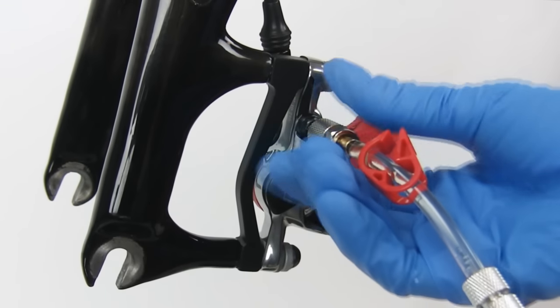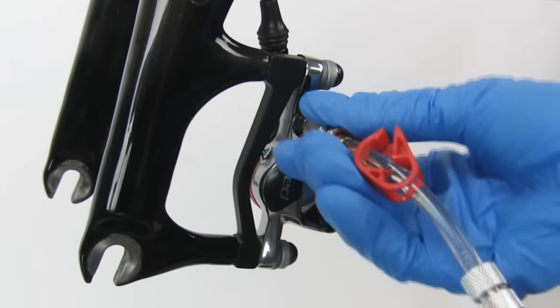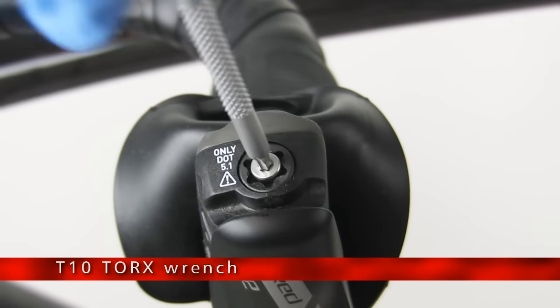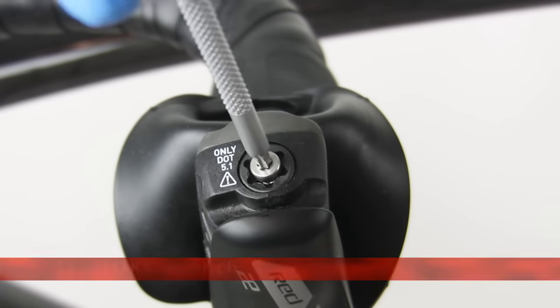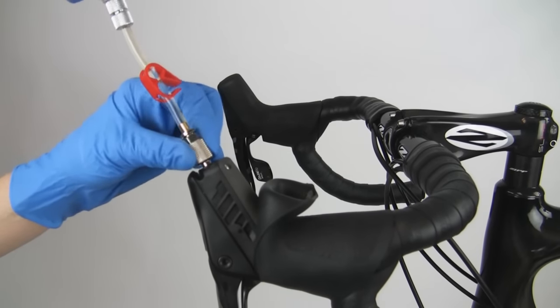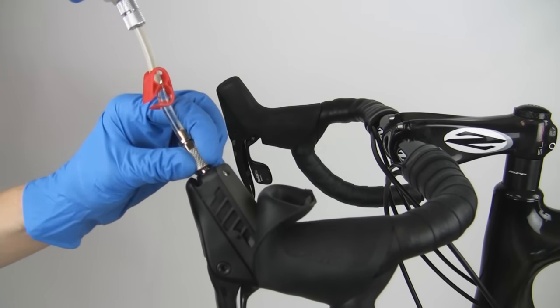Thread the half full syringe into the caliper bleed port. Pull the lever hood back to expose the bleed port. Remove the lever bleed port screw. Thread the other syringe into the lever bleed port. Wipe off any brake fluid that may drip from the bleed port.